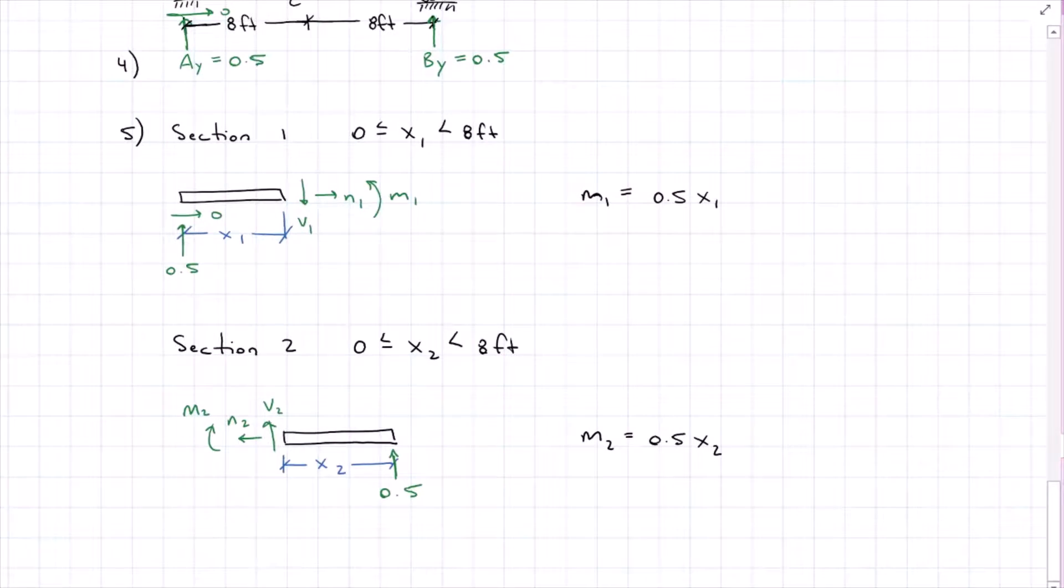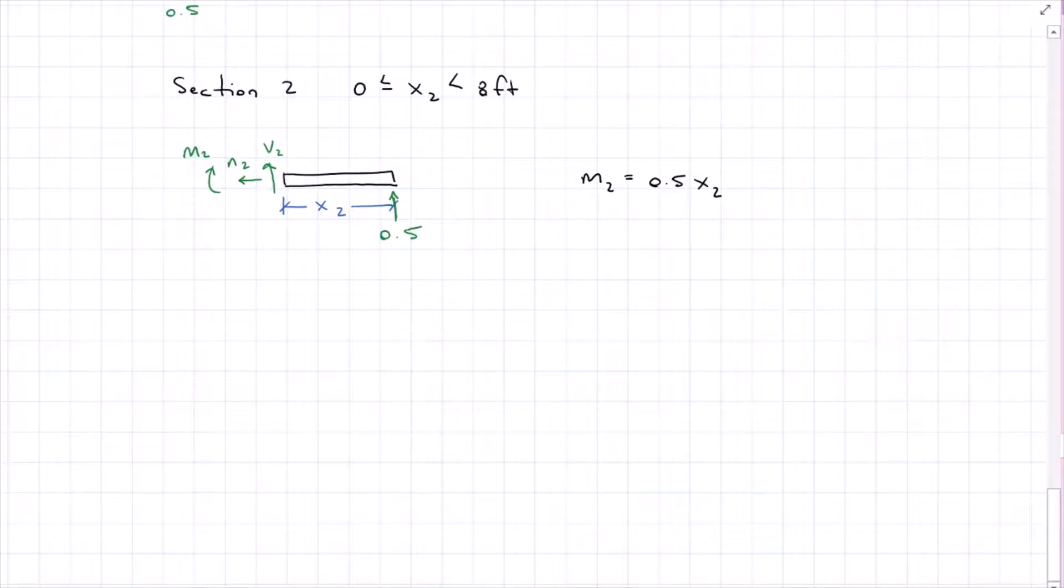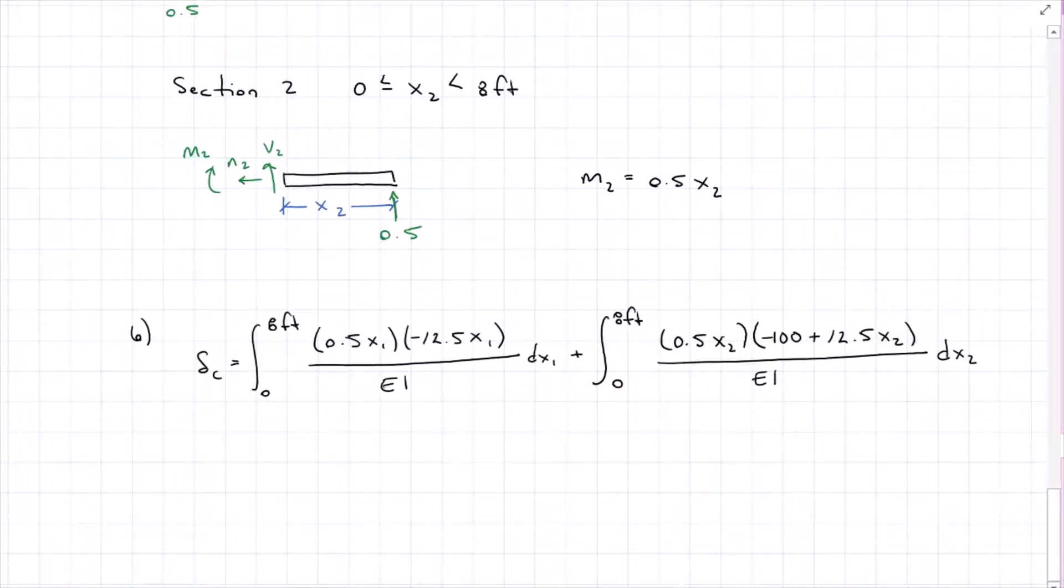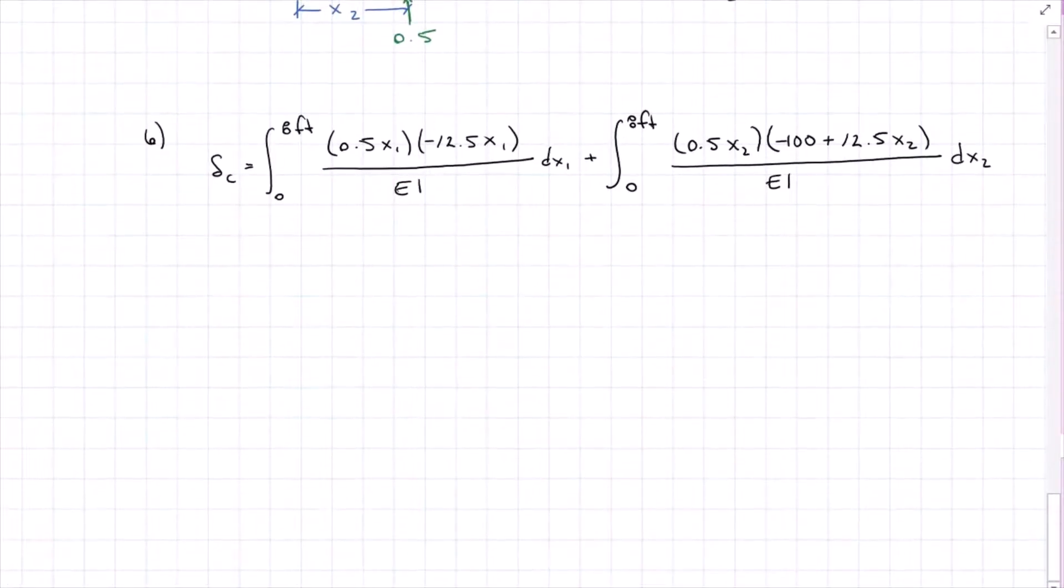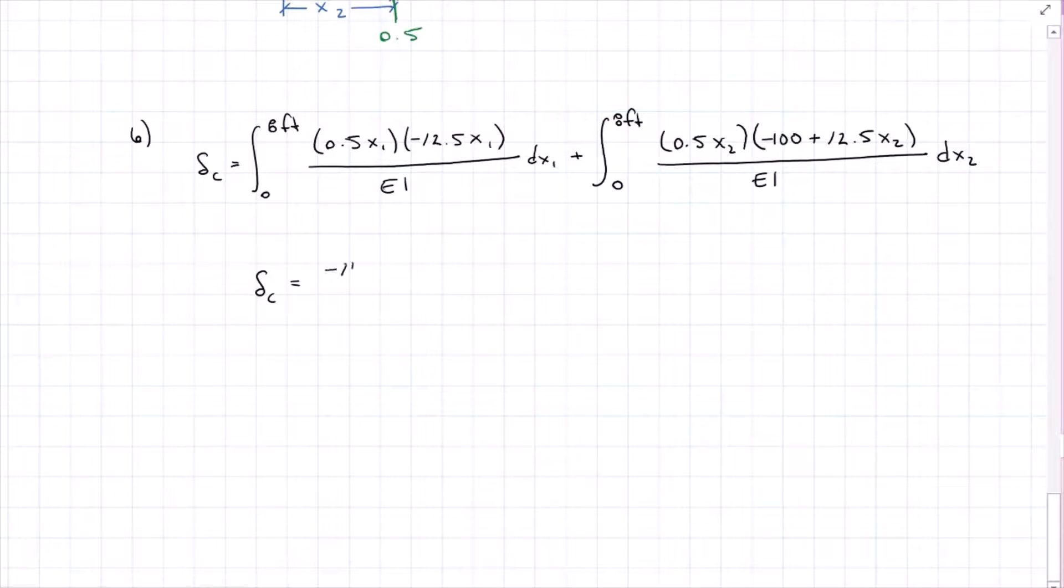The load is at C, so that means it's not included on either of these free body diagrams directly. It's indirectly included with the reaction, of course, but it's not directly on there, because it only occurs at eight feet, not zero up to eight feet. Then we move to step six, where we plug everything in. You'll see that our little m equation changes, because now we're looking at a point load for the deflection at C, but our big M equation, our original loaded equation, does not change. We reuse that every single time. It's only the virtual load and those reactions and moment equations that change.